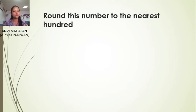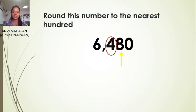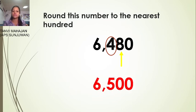Now round this number to the nearest hundred: six thousand four hundred eighty. Four is in the hundreds place, and the next door number is eight. So we add one to the hundreds place digit. The answer is 6,500, and the rest of the digits become zeros.